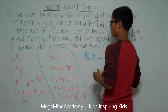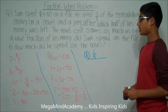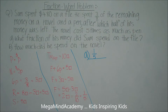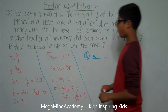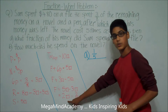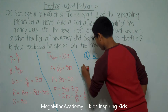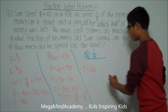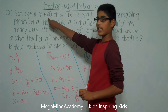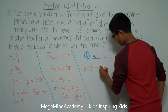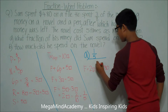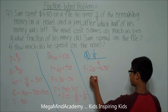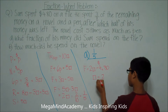Now let's move on to Question B: How much did he spend on the novel? We know that the file costs two units, and the file costs $4.80. So two units is equal to $4.80, which means one unit is equal to $2.40.